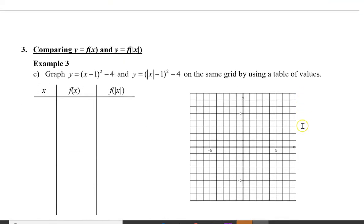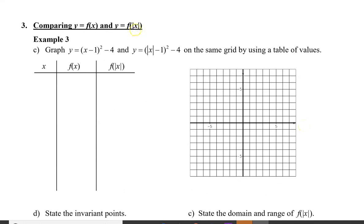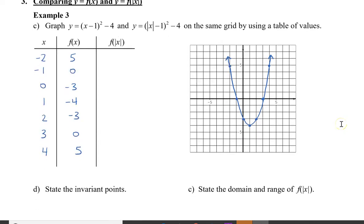Next we're going to compare the original graph, but this time taking the absolute value of x only. The same parabola is given, but only x has absolute value signs around it. I'll recopy the x and f of x values from before. Now I'll take the absolute value of the x values and plug them into the equation. When I take the absolute value of negative 2, I get 2, and 2 minus 1 squared minus 4 gives negative 3. For negative 1: absolute value of negative 1 is 1, giving negative 4.